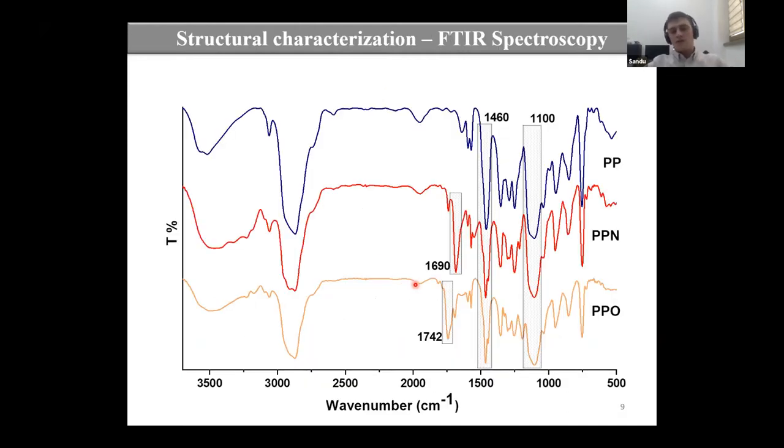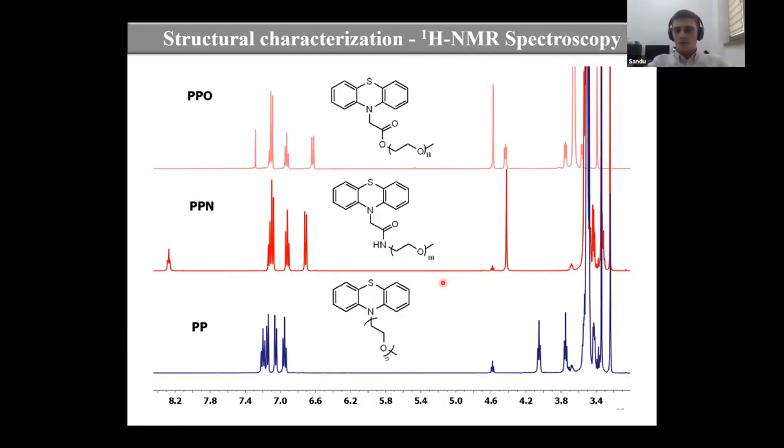The successful synthesis of this compound was confirmed by two different spectroscopic methods. The FTIR spectroscopy represents the vibrational bands characteristic to the functional groups from these compounds. You can see this vibrational band for PPN characteristic to amide group and in the third absorption spectra the vibrational band for PPO compound characteristic to ester group. Also they were confirmed by NMR spectroscopy. Here you can see the proton signals from each compound in the right ratio of their integrals and for compound PPN is very easy to observe this signal which is characteristic to amide proton.